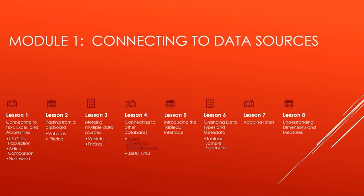The first module will focus on connecting to data sources. It has eight lessons in this module. We'll start by connecting to text, Excel, and Access files. I have the files for you in the video description, and they're listed on this slide. You're going to want to grab U.S. City's Population — that is a text file. Airline Comparison is an Excel file. And there is an Access Database file called Northwind that you're going to want to grab as well. There's more that you're going to grab before we're done with this slide.